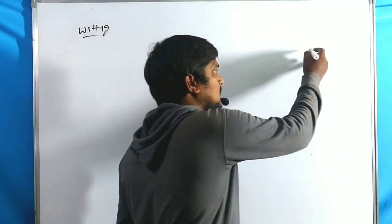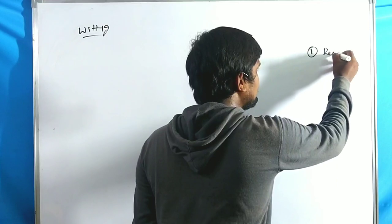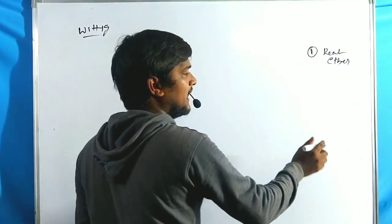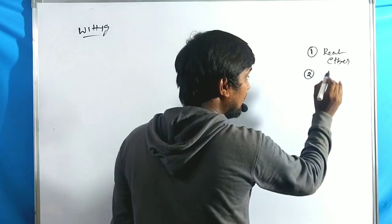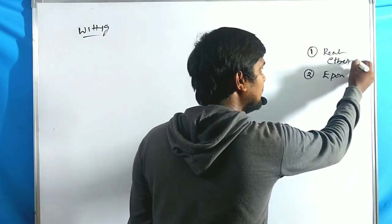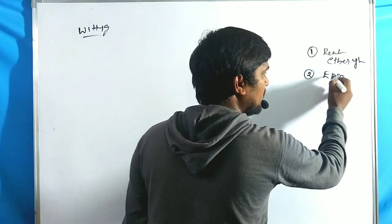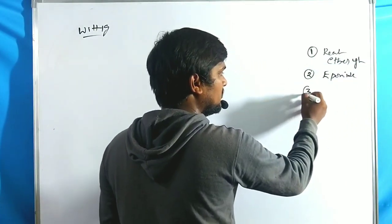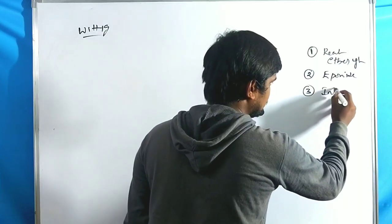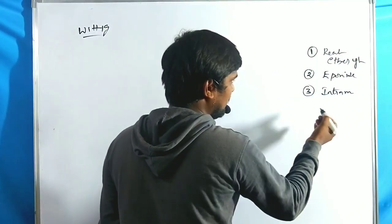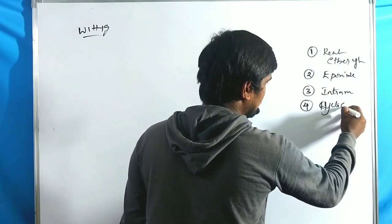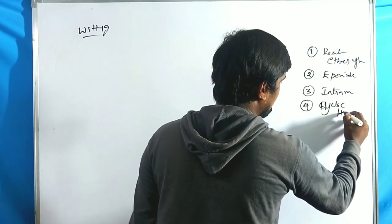In this lecture, we are discussing: first, reaction with ether-containing ylides; second, reaction with epoxides; third, intramolecular Wittig reaction; and fourth, cyclic hemiacetals. We will go through these one by one.